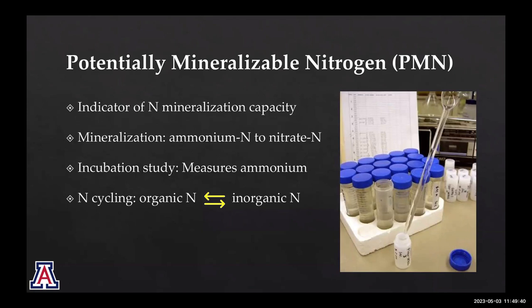We cannot only think about our plants, because we're growing them and we can always apply fertilizer. But we also think about biology. Biology needs to work to cycle nitrogen — it makes it possible to go from ammonium to nitrate. What we exactly measure is a reservoir of nitrogen in soil that is not right now available to the plant, but may potentially be available to the plant.